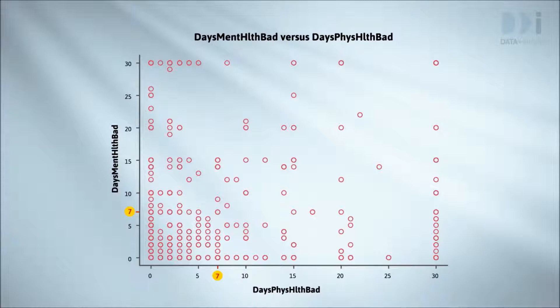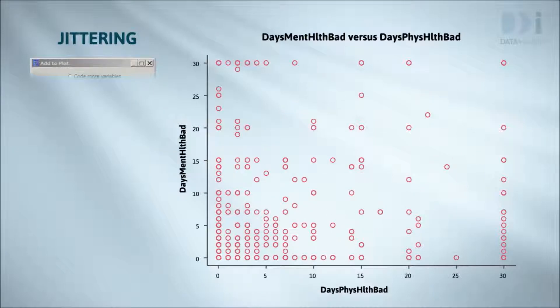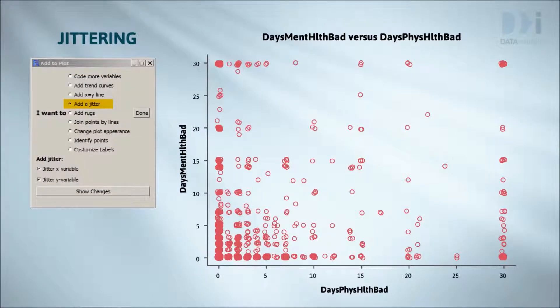So how can we get around this? There are two main methods: jittering and transparency. With jittering, we add a little bit of random horizontal or vertical displacement to each point to break them apart so we can see where multiple points are sitting. This helps a lot, but this example is so extreme we still see no indication that 40% of the data is sitting at 0,0 in the bottom left-hand corner.